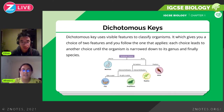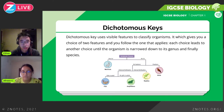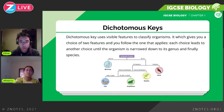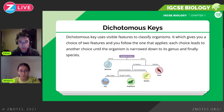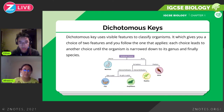Dichotomous keys use visible features to classify organisms — think about morphology here. At each step you're given a choice, and depending on your answer you're led to another choice or to the next organism. For example, the first question might be 'does this organism have fur?' If it has fur it goes one way and it's a mammal. If it doesn't, you go to 'feather or no feather?' If it has feathers it's a bird. Then you might go to internal or external fertilisation to distinguish reptiles.